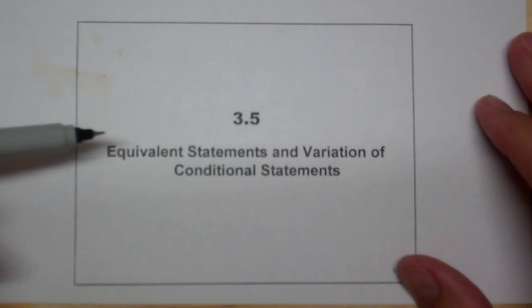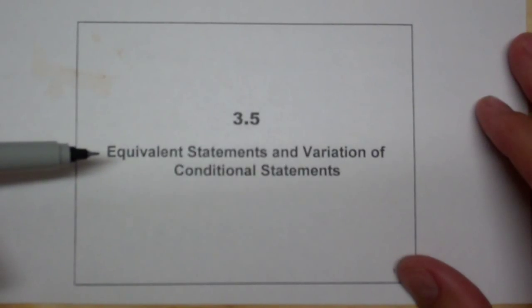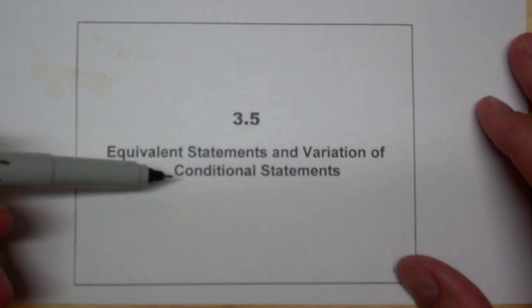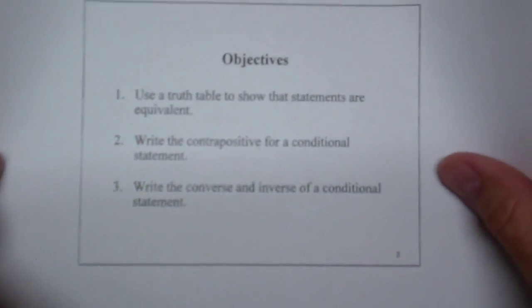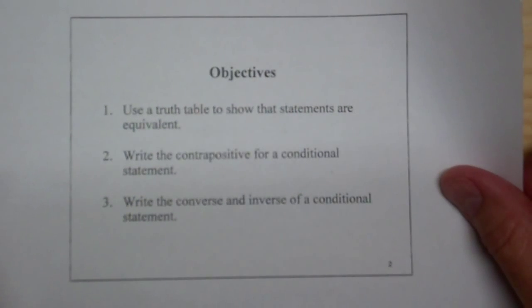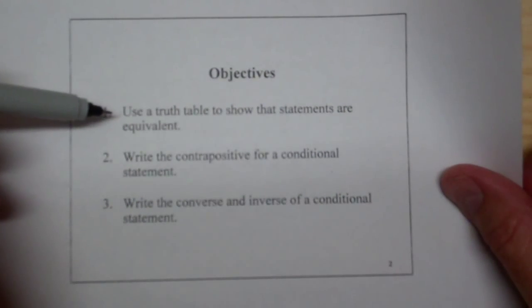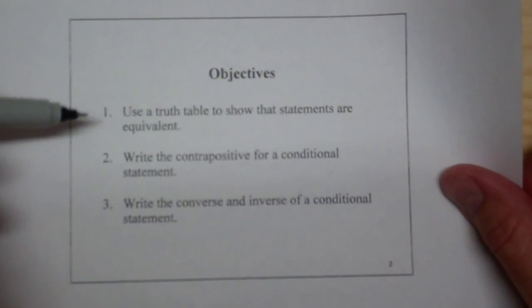This is section 3-5. We want to talk about equivalent statements and variations of conditional statements. We have just three examples, and we want to use the truth table to show that statements are equivalent.